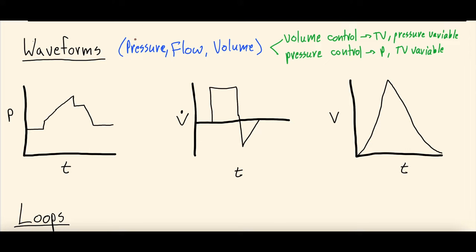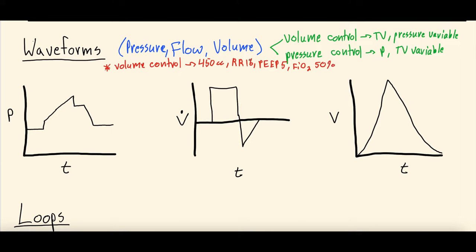What we have drawn here are these waveforms with the patient on volume control. You choose a certain tidal volume — say, 450 cc's — and that is set so they get that amount each breath. You'll set their respiratory rate, say 16, and then you'll set their PEEP, their end-expiratory pressure — say PEEP of 5. You'd also set their FiO2, their fraction-inspired oxygen, say 50% for this case. The most relevant numbers for this discussion are the PEEP and that they're on volume control.